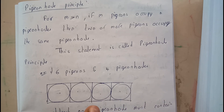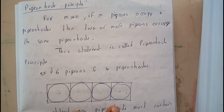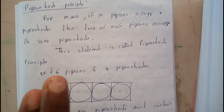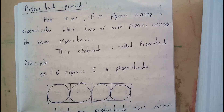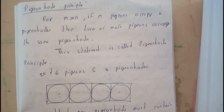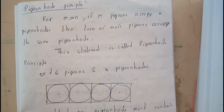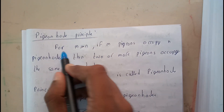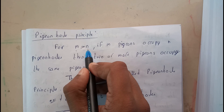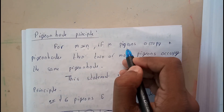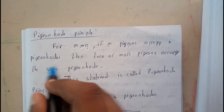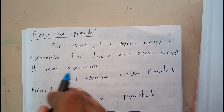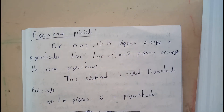We need to place those two somewhere, which causes one hole to increase in number. If I place it here, they become two — so we place more than one in a single pigeon hole. The statement is: for m greater than n, if m is the number of pigeons occupying n holes, then two or more pigeons occupy the same pigeon hole.